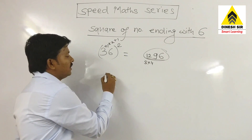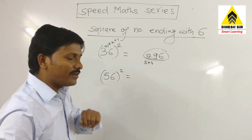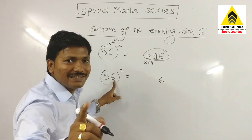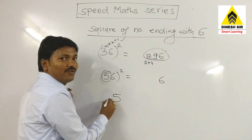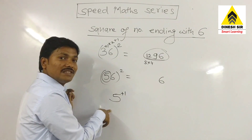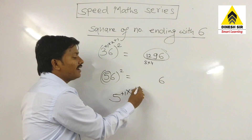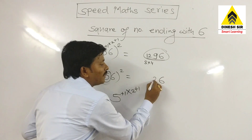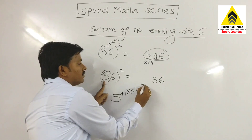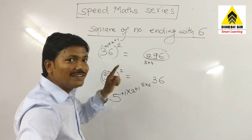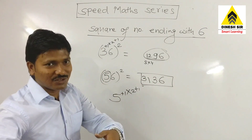Let's see one more example. If I have 56, how to solve this square? Write 6 in the last digit as it is. The first digit is 5. Add 1 to get 6. Double the 6 to get 12. Again add 1 to get 13. Instead of writing 13, write 3 and carry 1. Now multiply 5 by 6: 5 sixes are 30. Add the carry to get 31. So the square of 56 is 3136.